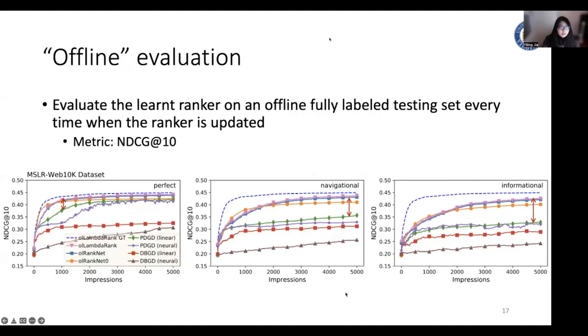So our first experiment evaluated the offline performance of our model. In this evaluation, we evaluated the ranker on offline fully labeled testing set every time when the ranker is updated. So this can be viewed as an evaluation on the convergence of our model. And we can see significant improvement of our proposed model compared to all the other baselines. And our neural model also shows some improvements compared to this linear model.